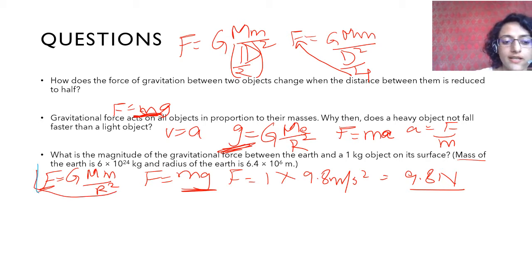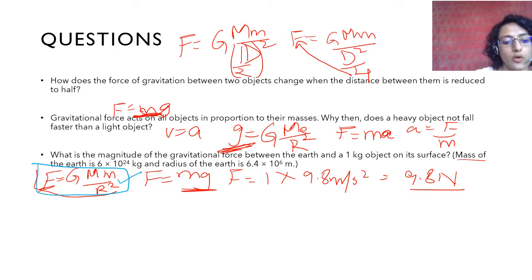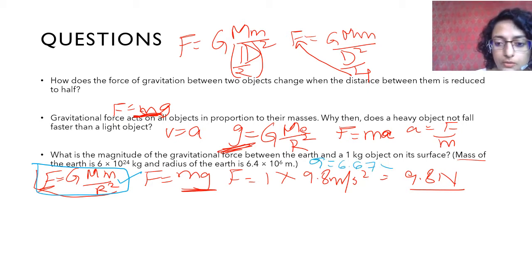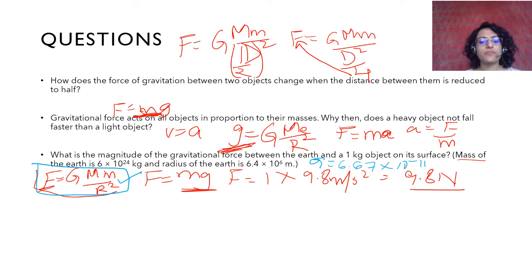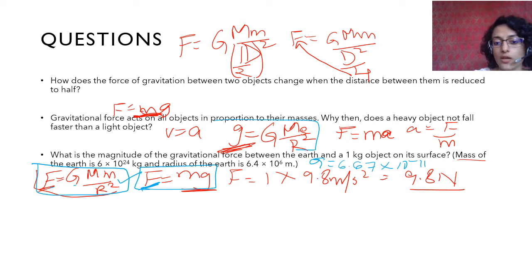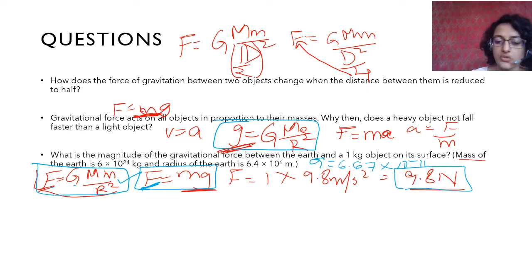When solving in the exam, for subjective questions use the full formula F = GMm/R² to show the teacher you can calculate it. Remember G = 6.67 × 10⁻¹¹. For objective questions, just use F = Mg. Both formulas are equivalent — that is how we derived the value of small g.